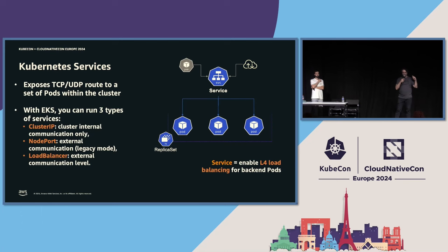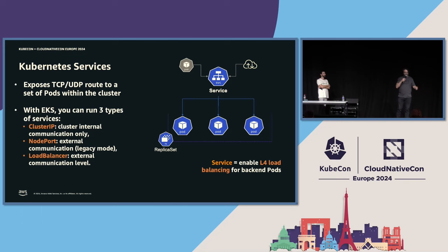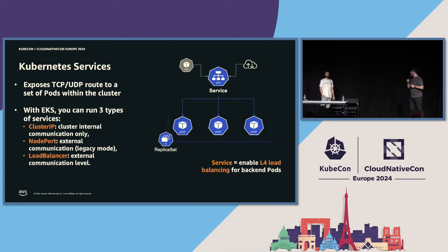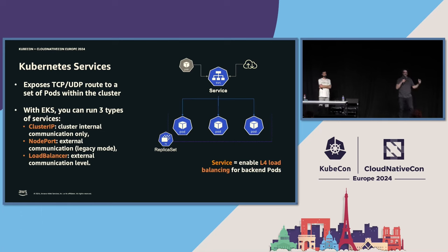Now, keeping AZs in mind, we're at KubeCon so we have to talk about Kubernetes. Kubernetes networking is a different paradigm. A service enables load balancing to your pods. There are different types of services — mostly cluster IP for internal cluster communication, and load balancer service to expose services externally.